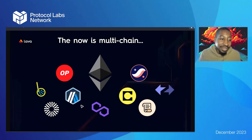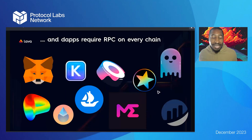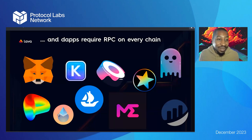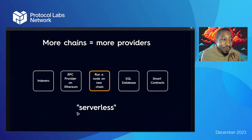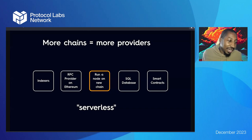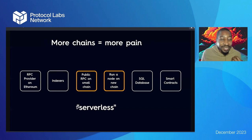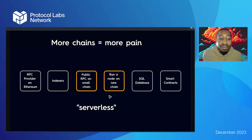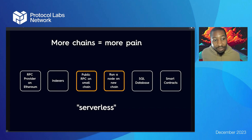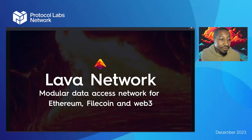We have multi-chain with many chains sprouting up intended to make a more decentralized reality possible. The problem is: as new chains pop up, dApps require RPC on every chain. Different chain architectures and different ecosystems have made this a difficult infrastructure problem. More chains means more RPC providers, more people spinning up nodes on new chains. Public RPCs on small chains get overwhelmed, and developers end up running their own nodes just to service their dApp.